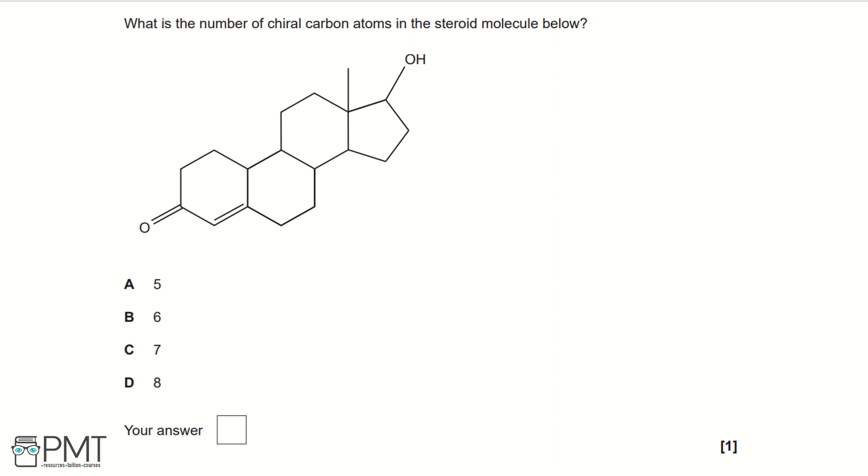A chiral carbon is when you have four different functional groups attached to a carbon atom. So looking at this steroid molecule,